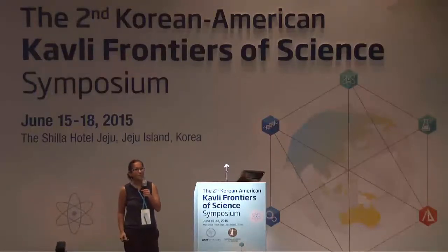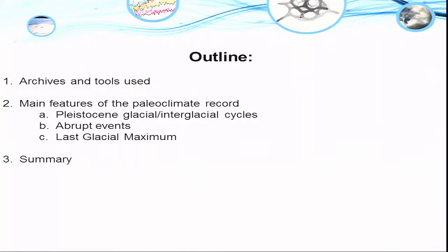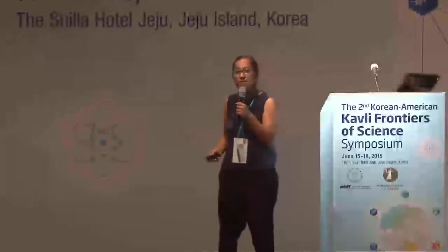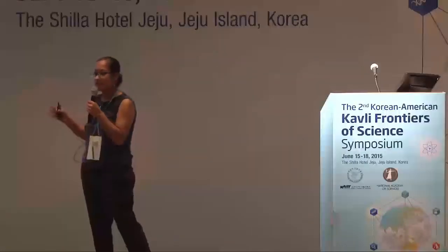Just to give you a roadmap for the talk today, I'm going to begin by giving you an overview of how we do what we do. I'll talk a little bit about the different types of archives that we have to study Pleistocene to Holocene climate change. The Pleistocene is the epoch that spans from about 2.6 million years ago to 11,000 years ago, and the Holocene spans the last 11,000 years. I'll go into the different types of tools that we use, mainly to give you a sense of the assumptions that go into our reconstructions of climate change. I'll talk about some of the main features of the climate record from what we know about glacial-interglacial cycles, or these swings between extrema that occurred in the Pleistocene roughly every 41,000 to 100,000 years.